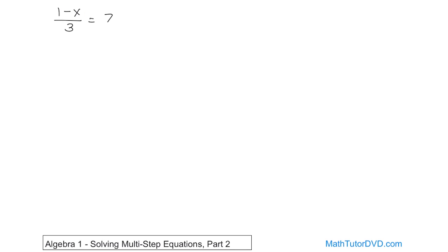because they see the 1 minus x here, so they know there's some subtraction going on, so they think they might need to add or subtract something, but then you have this division bar, so they don't know what to do first.